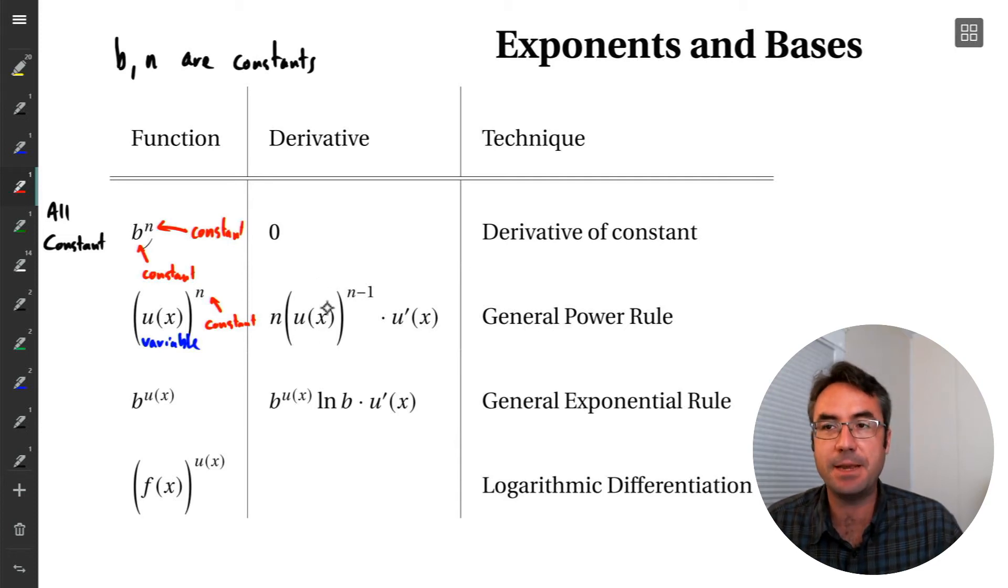So we bring down the exponent, keep what we have inside the same, subtract one, and then we multiply by the derivative of our inner function. Really, this is just also chain rule.